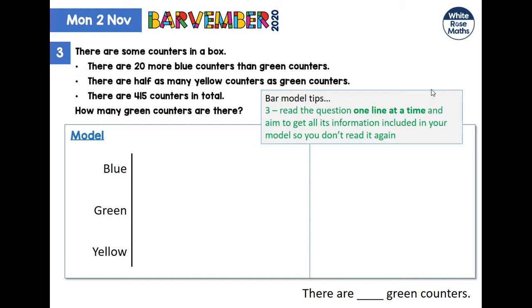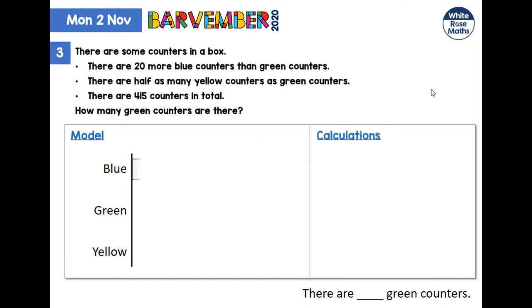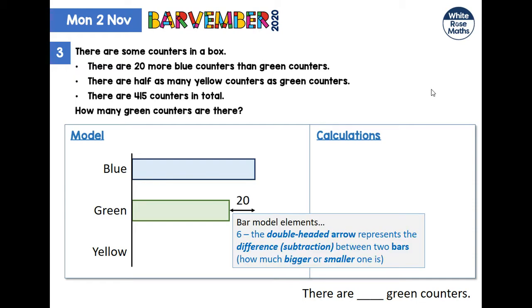There are 20 more blue counters than green counters — so blue is more than green by 20. Here we have our sixth bar model element: the double-headed arrow, which represents the difference or subtraction between two bars. That also covers how much bigger the blue bar is than the green bar, or how much smaller the green bar is than the blue bar. Our storyline tells us that blue was 20 more.